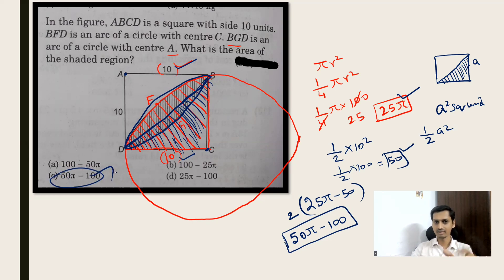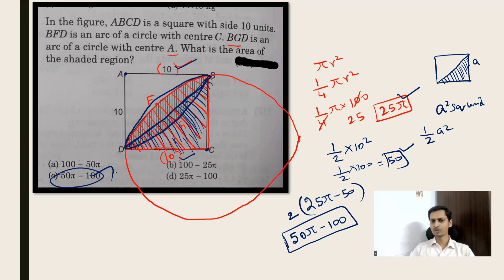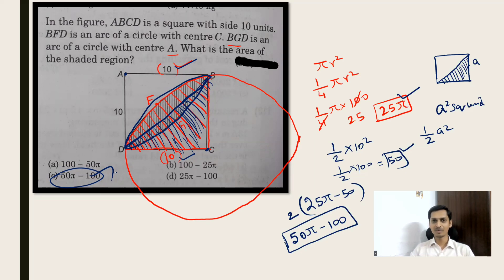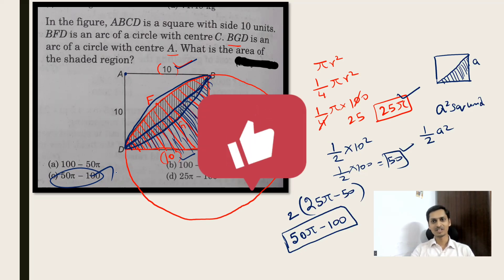The shaded region BFD-GB has area 50π − 100. This question is actually straightforward once you apply your conceptual knowledge of the area of a square, circle, and triangle. You can expect basic questions like this in different forms in competitive exams. Practice more questions like this to score more marks. Stay connected for more challenging questions — thank you so much for watching!